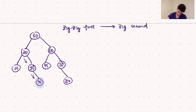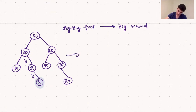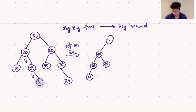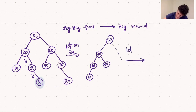Let's first do the zig-zig. We left rotate the grandparent of 35, which leaves 30 at the root, 20 as its left child with the same subtree, and 35 as its right child. To bring 35 to the root of this subtree, we left rotate again. This brings 35 to the root and 30 as its left child, containing the same left subtree as before.